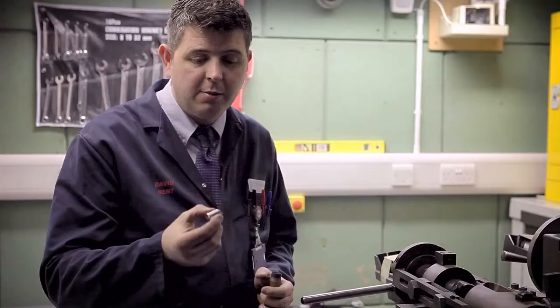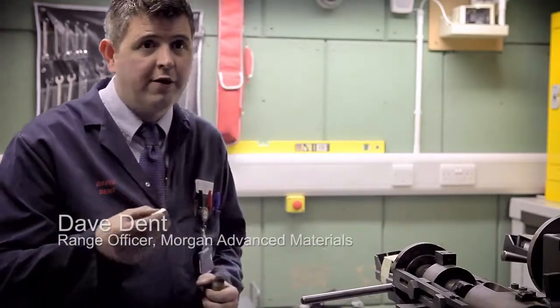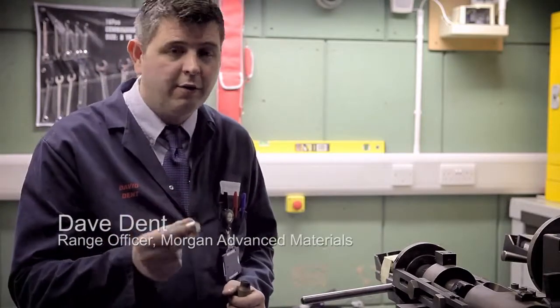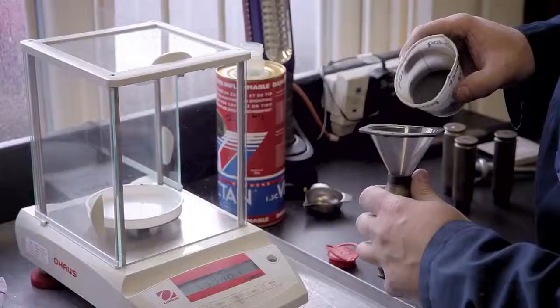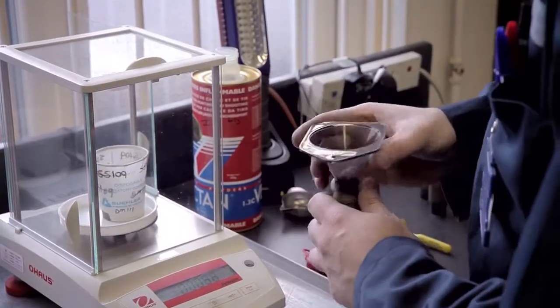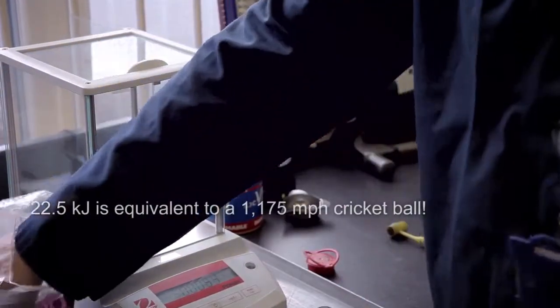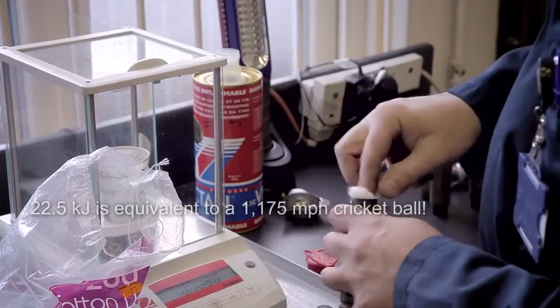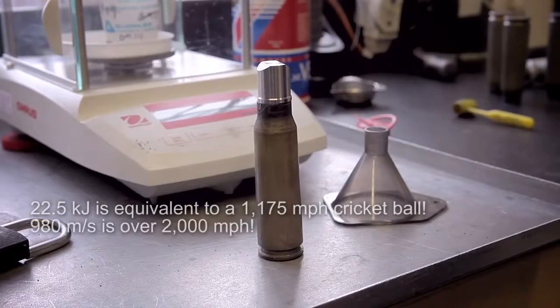What we're going to be firing today is a 20mm Frag Simulating Projectile, or FSP, which is representative of a 155mm artillery cannon fire. Energy ratings of this today hopefully will be around about 22 and a half kilojoules, which will speed-wise be approximately 980 to 1000 mps.